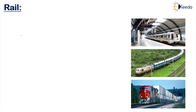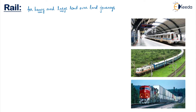The first type is rail transport. This is suited for heavy and large loads over long land journeys. Whenever you have heavy and large loads and need to take them from one place to another via land, we can go for what is called rail transport.